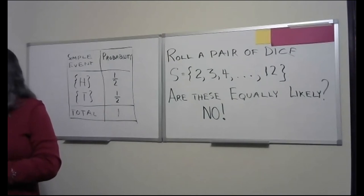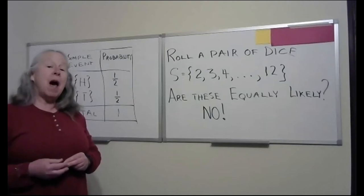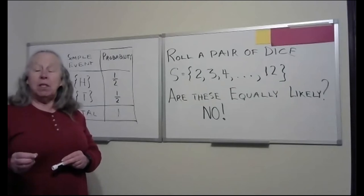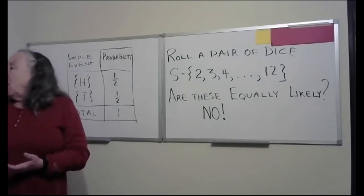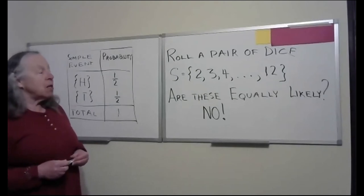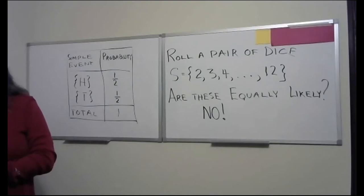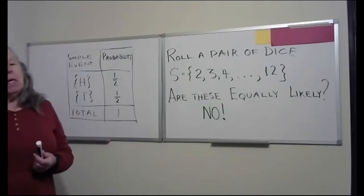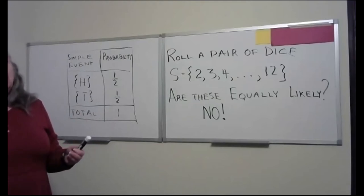Simple events will occur with probability one over n. When I roll a die, each of the numbers has a probability of one sixth. Our sample space consists of sample points, and the simple events are those single sample points. The properties of probabilities: we always write probability as either a fraction or decimal between zero and one, not as a percent.